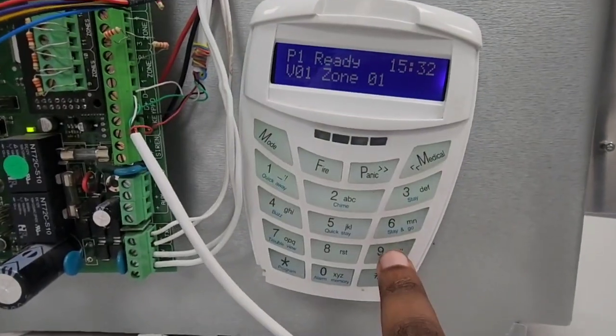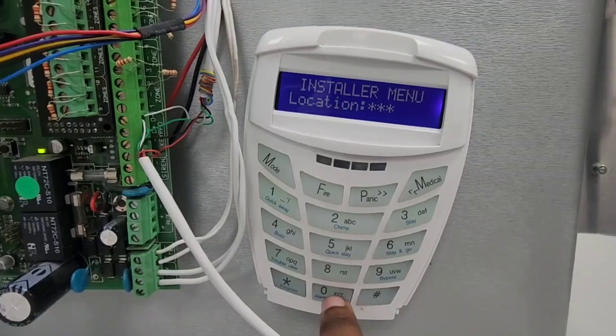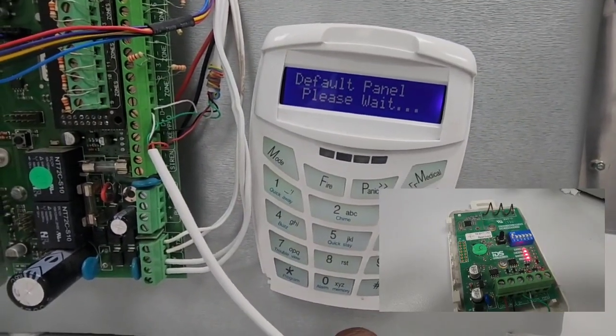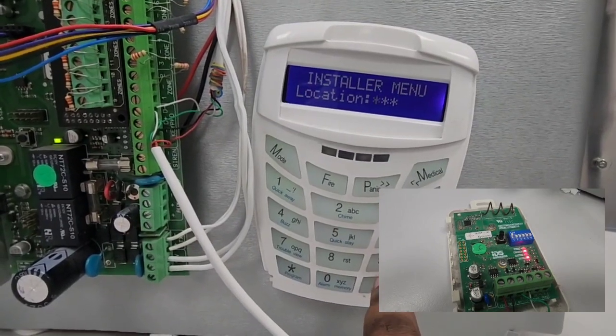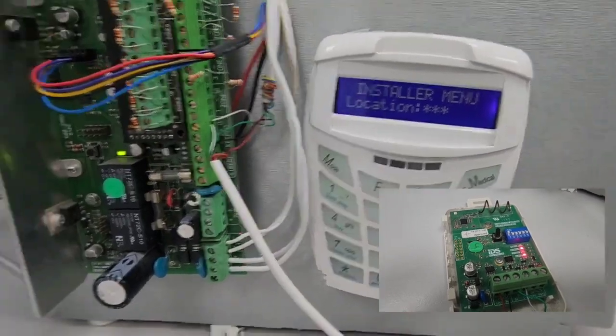Another way to default the wireless is by putting the installer code and then star, putting zero and then star, then seven star. So this will default the receiver and again you need to wait for the trouble LED to stop flashing until only the network is on solid.